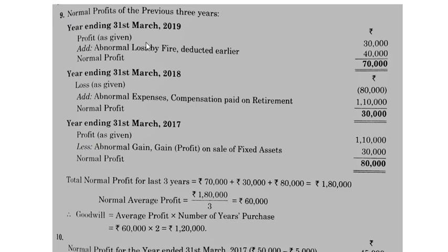Looking at the solution: profit for 2019 is given. Add back abnormal loss of 40,000 to get actual profit of 70 (in thousands). For 2018: profit is given as 20,000 (actually a loss is given as negative). The loss figure — it is not a regular/normal expense, so add back to get actual profit. For 2018: profit given is 1,10,000 including abnormal gain of 30,000 — subtract the abnormal gain since it is not actual income, giving actual profit of 80,000. Three years' actual profits calculated; now get average profit and then goodwill.